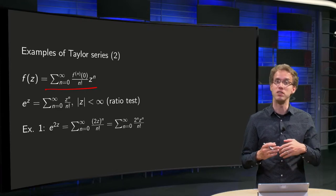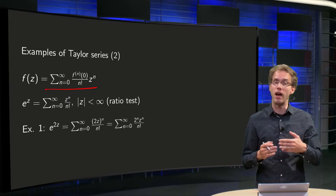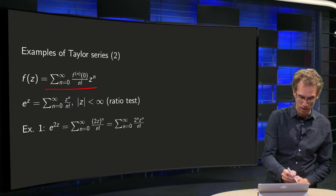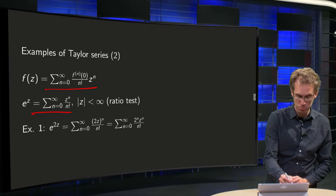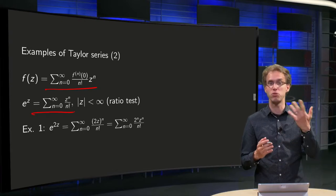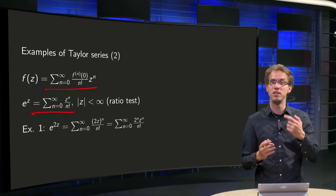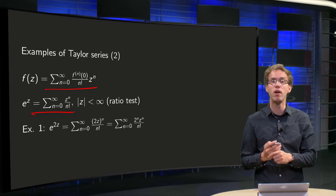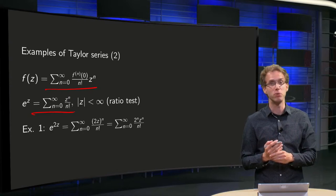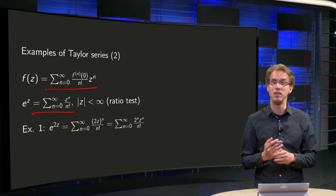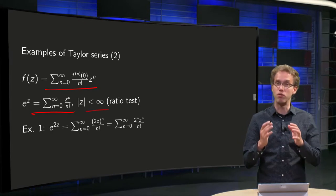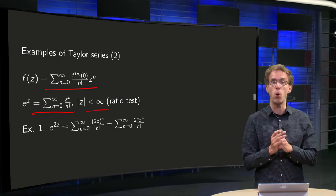So that means that if you evaluate at 0, any derivative will be just 1, which means that the Taylor series for the exponential function — just as in the real case — is the sum from n equals 0 to infinity of z to the power n over n factorial. You can use the ratio test to establish that the radius of convergence is infinity, so it converges for all z.